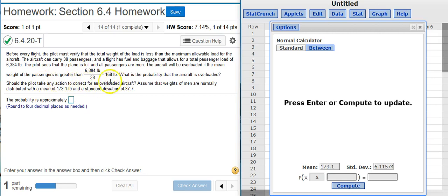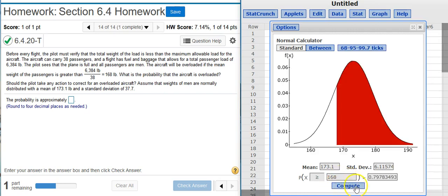So, this needs to be greater than 168. I hit compute, and there's my probability that we're overloaded.